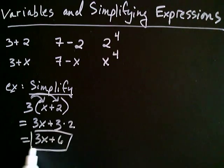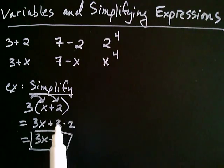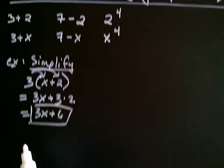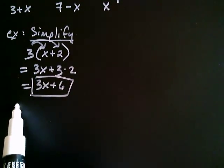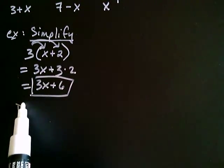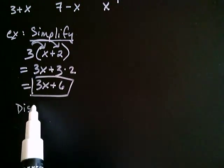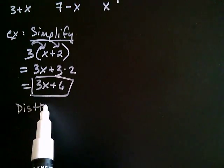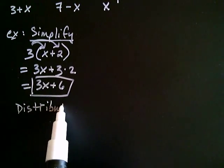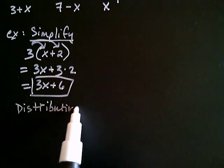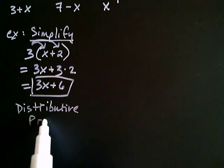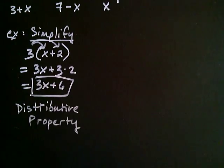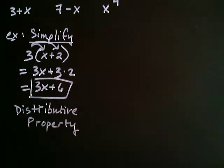So we have certain properties in algebra, and this property is called the distributive property. There are certain properties in algebra that allow you to bypass the order of operations. So the distributive property — this is one of those special properties. Let's see another one.